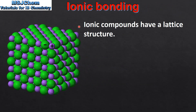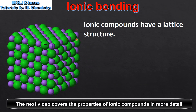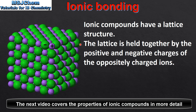Ionic compounds have a lattice structure, which we can see on the left. The lattice is held together by the positive and negative charges of the oppositely charged ions.